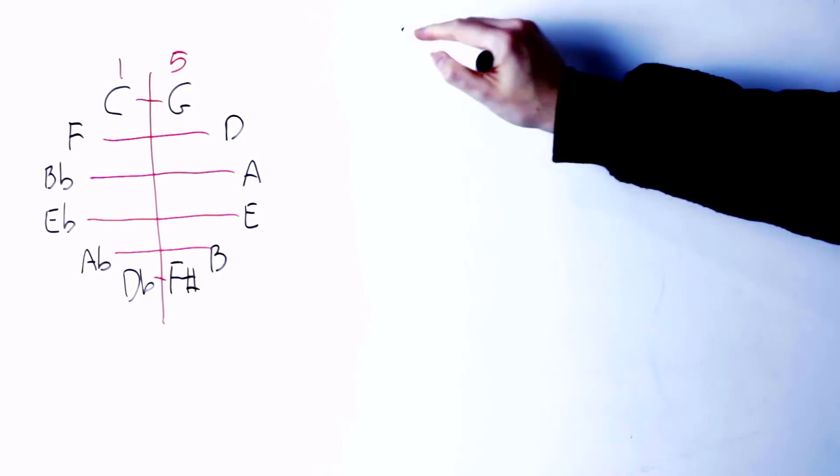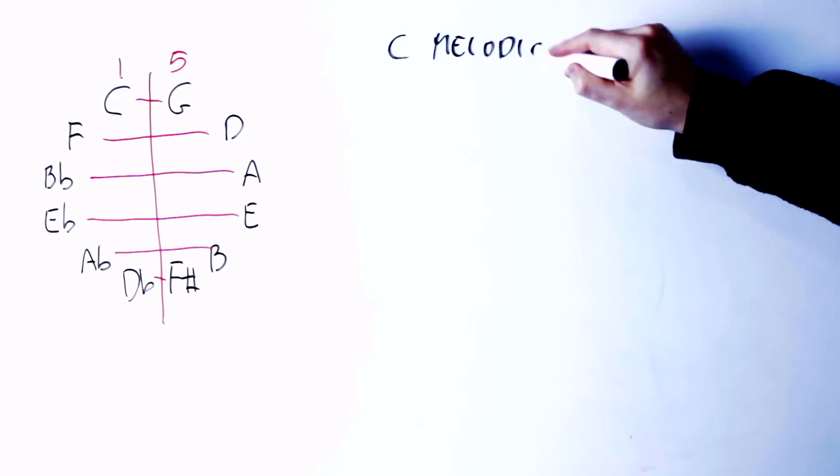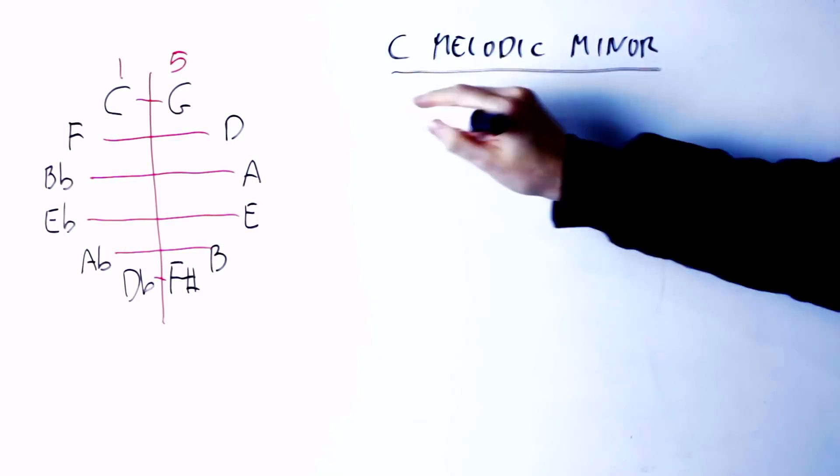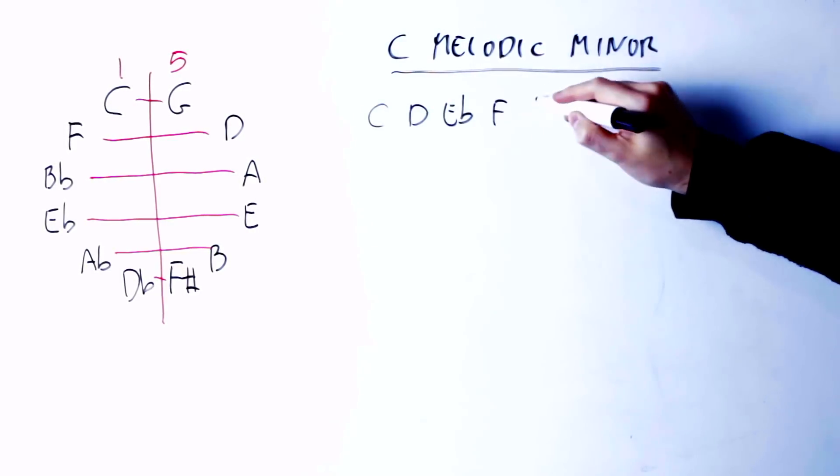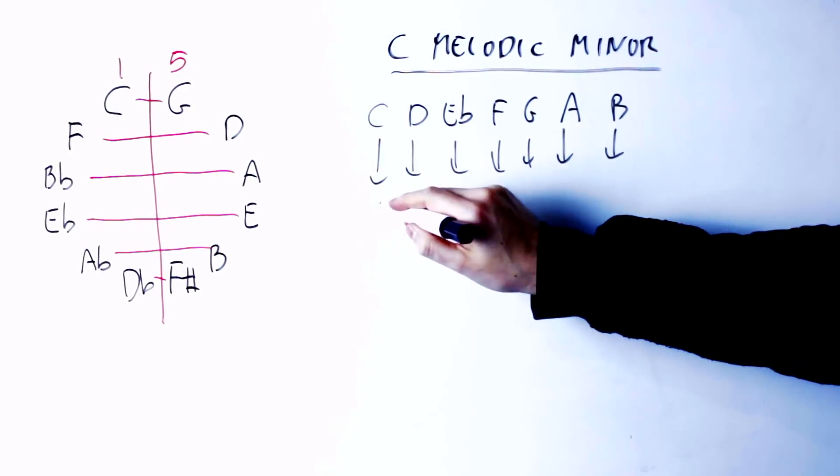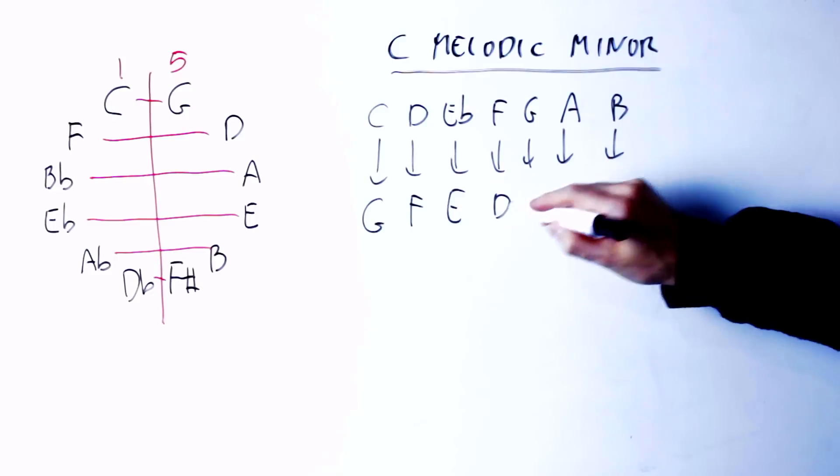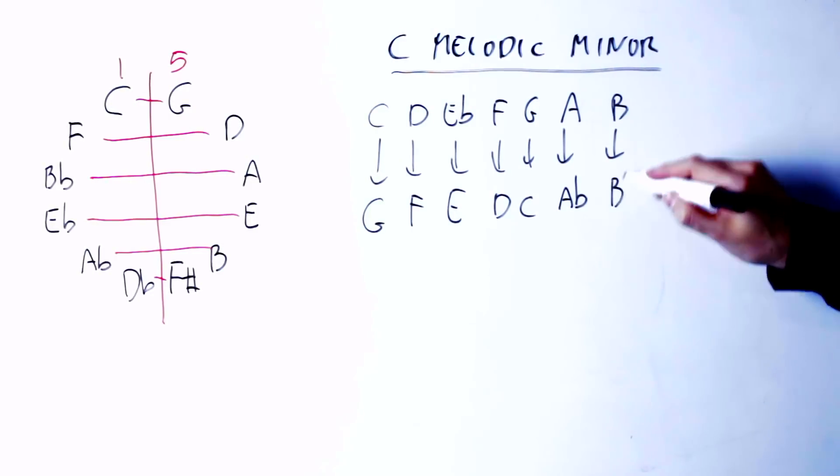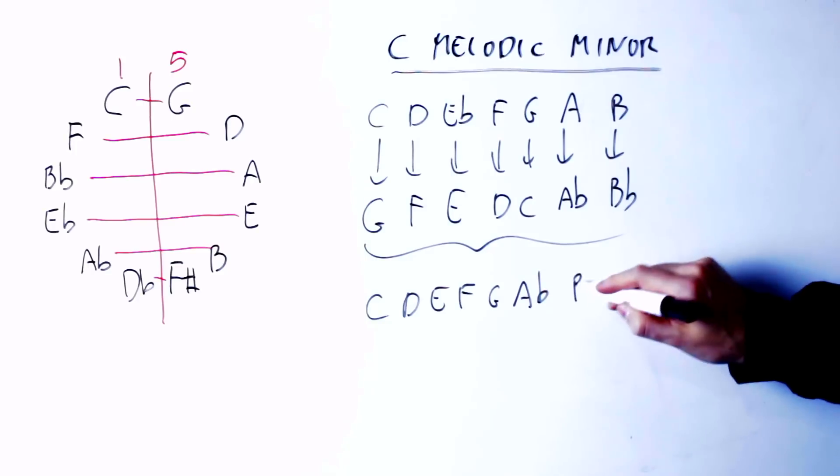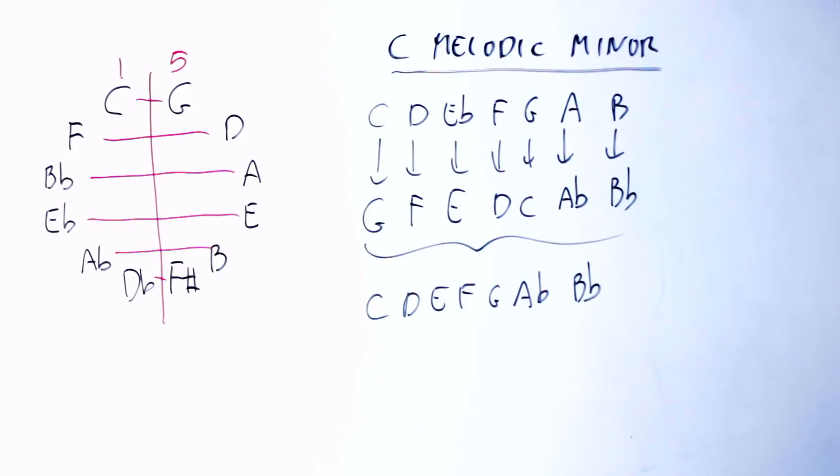What happens though if we apply negative harmony, for instance, to the melodic minor scale? The C melodic minor scale is C, D, E flat, F, G, A, B. So again, let's flip those notes around. C becomes G, D becomes F, E flat becomes E, F becomes D, G becomes C, A becomes B flat, B becomes A flat. When I reorder those notes starting from C, I get C, D, E, F, G, A flat, B flat.